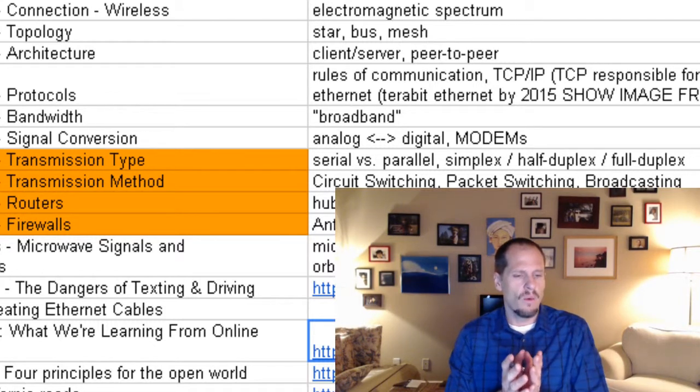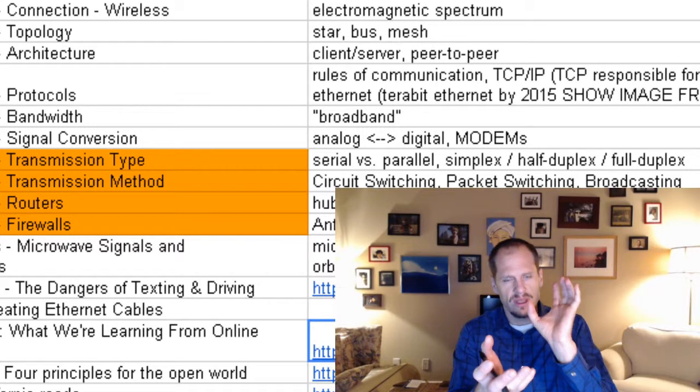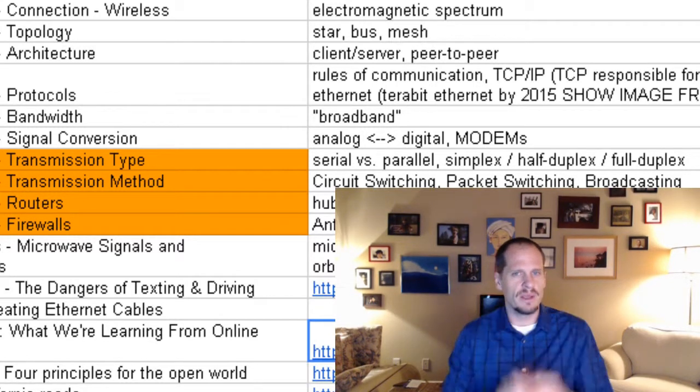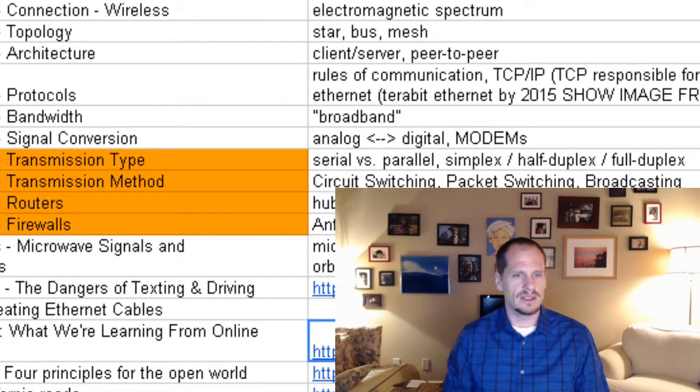And then we're going to have to decide what role do the different devices on the network have. Will one always serve as a client and others will always serve as servers, or will there be a peer-to-peer sort of model that we use? And that was sometimes known as architecture.